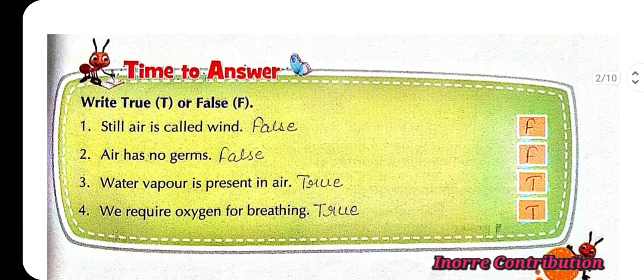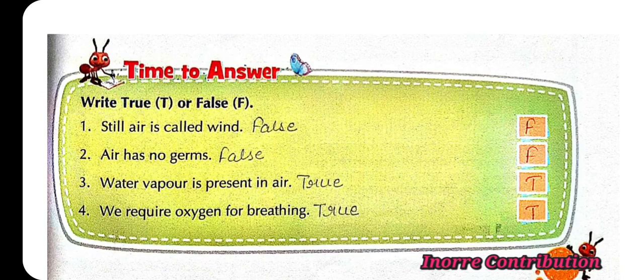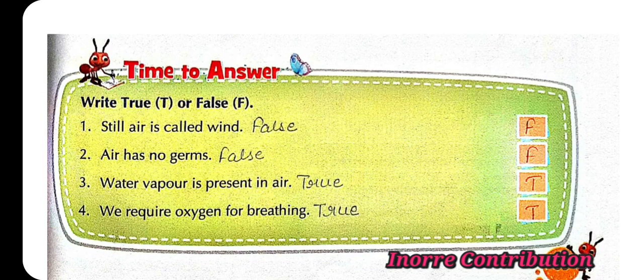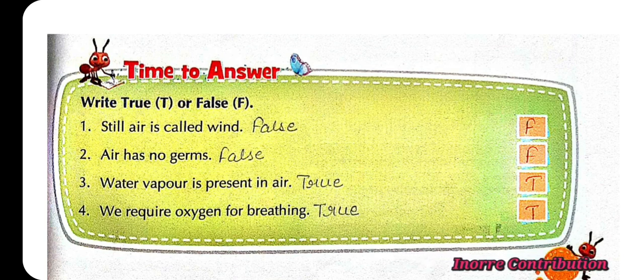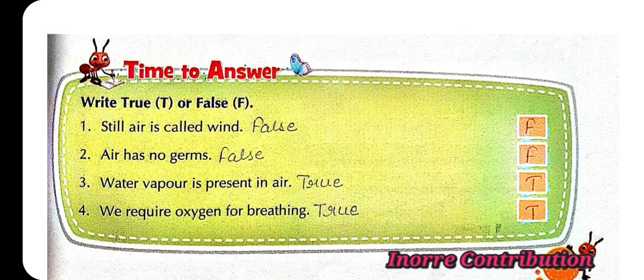Time to answer. Write true T or false F. First, still air is called wind, false. Second, air has no germs, false.